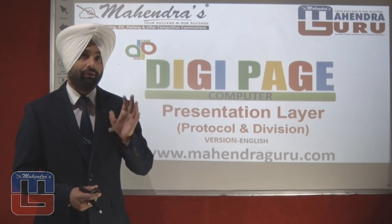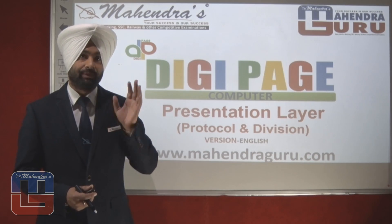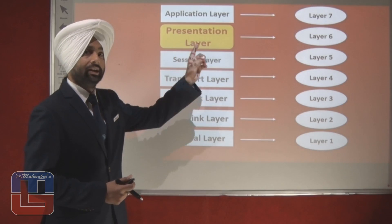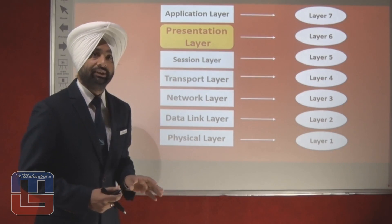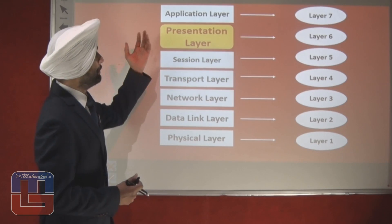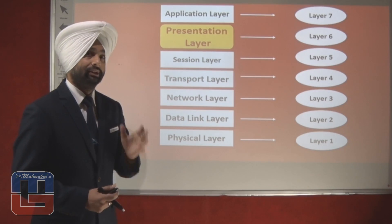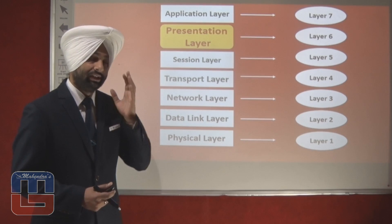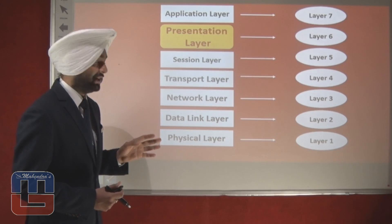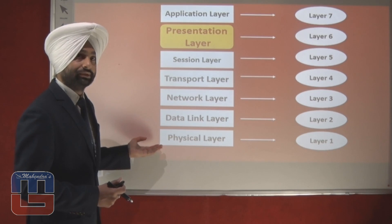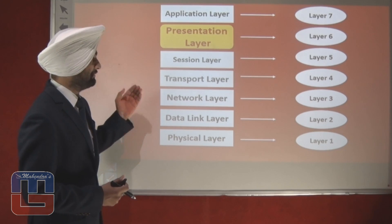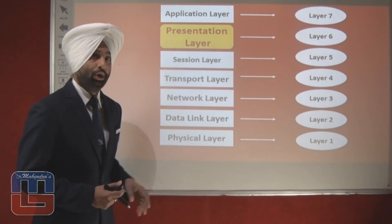Let us have a look at where the presentation layer is situated in the 7-layer architecture. The presentation layer is Layer 6 of the OSI model. The very first layer is the physical layer, followed by the data link layer, and then the network layer, which is the third layer of the OSI model.